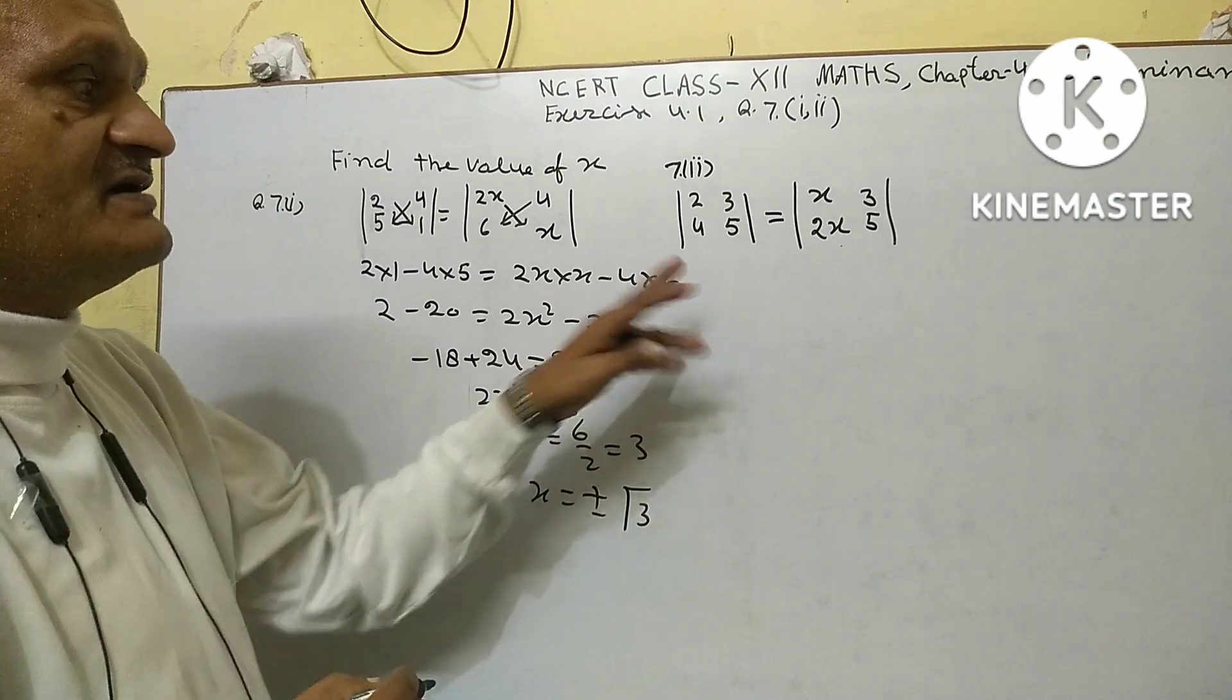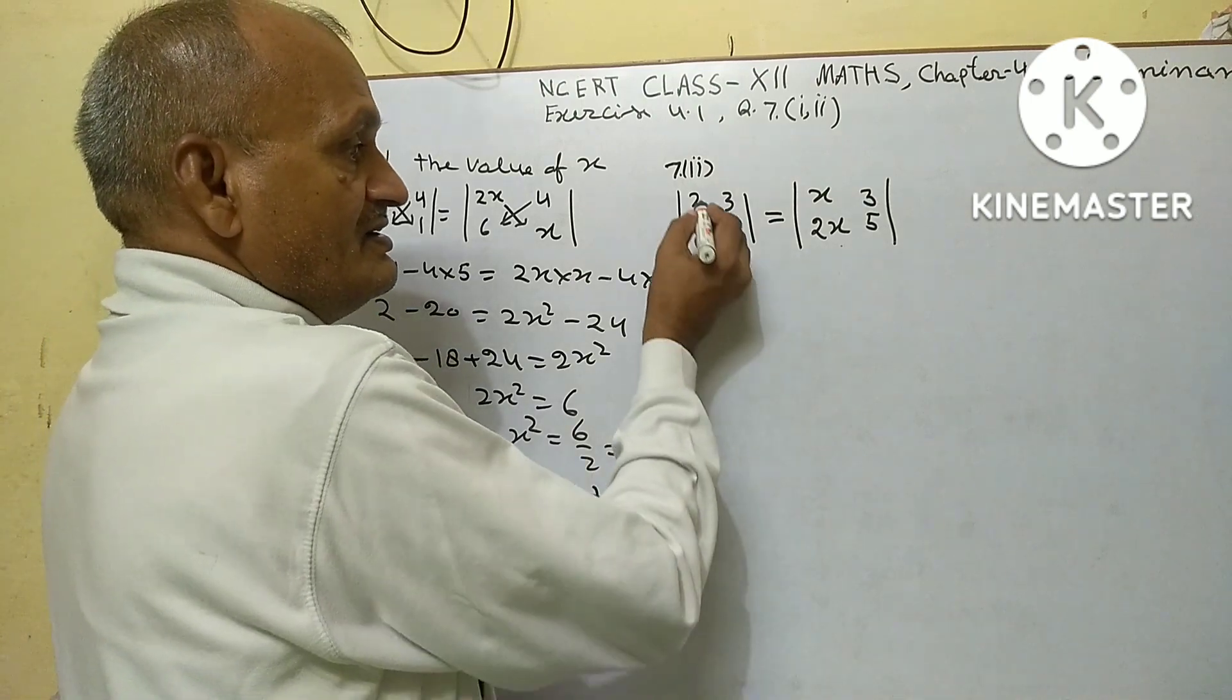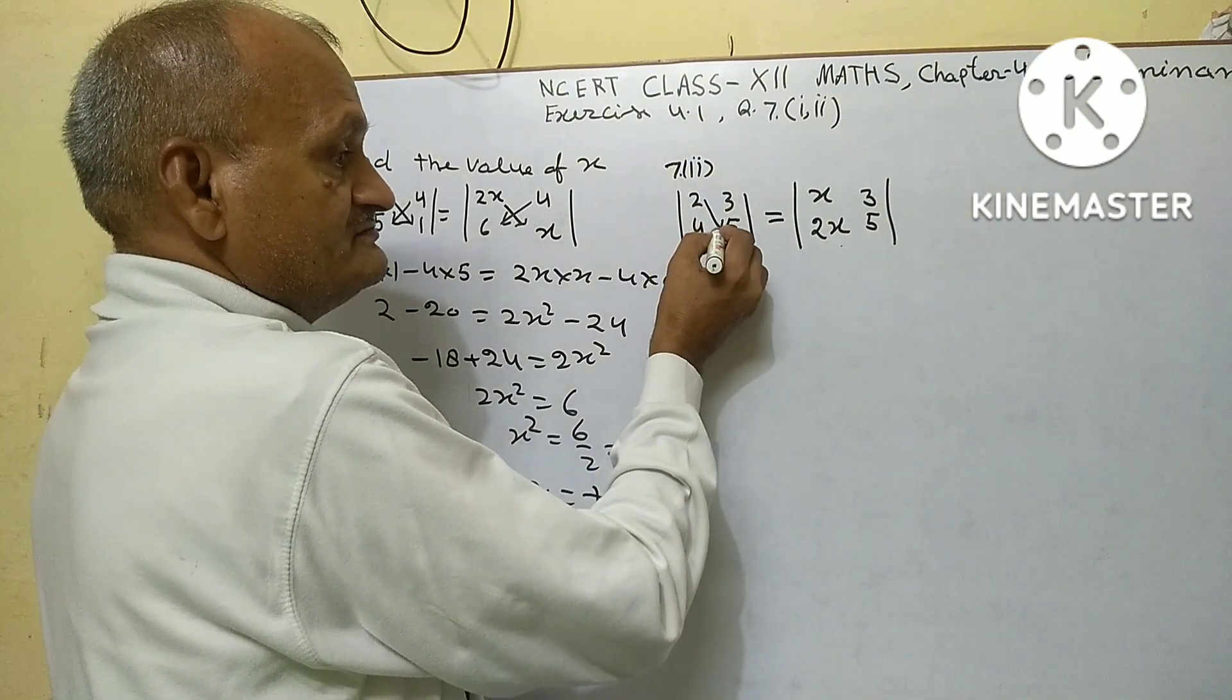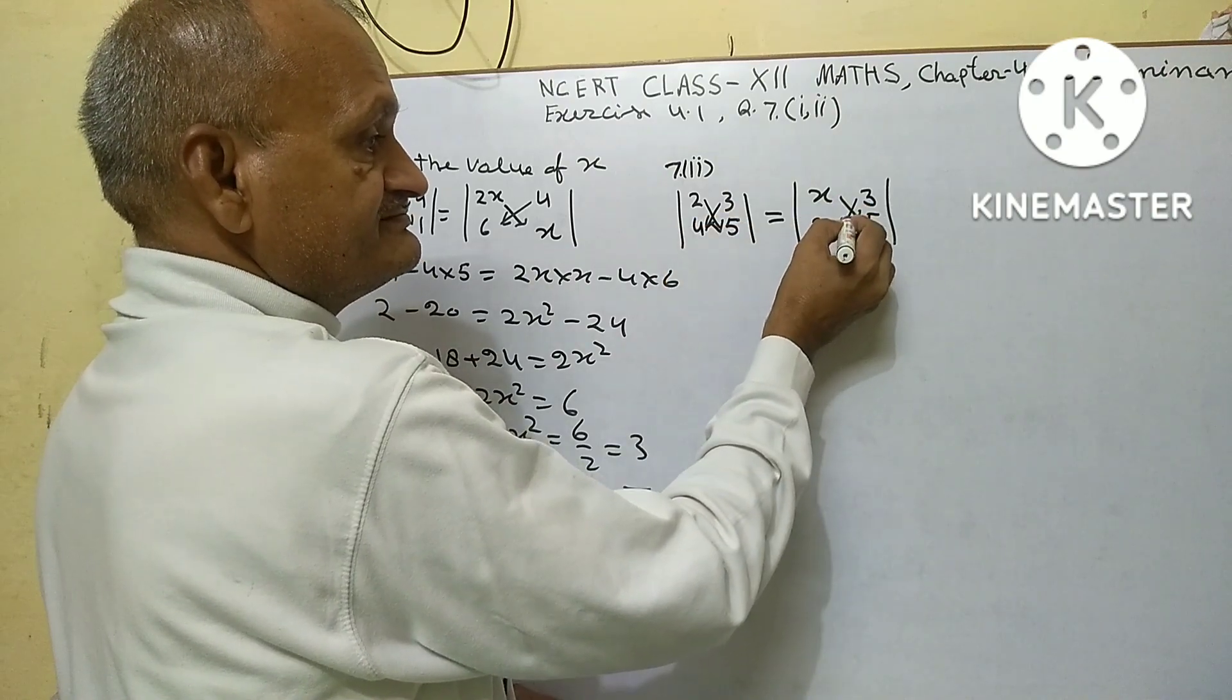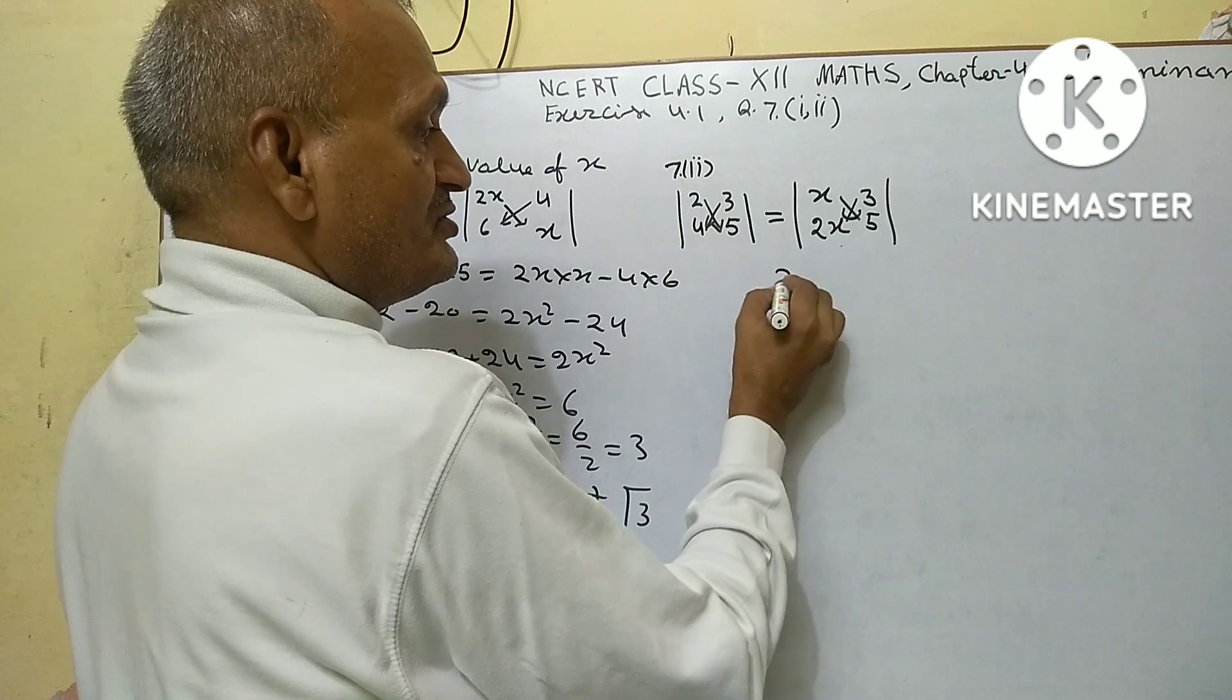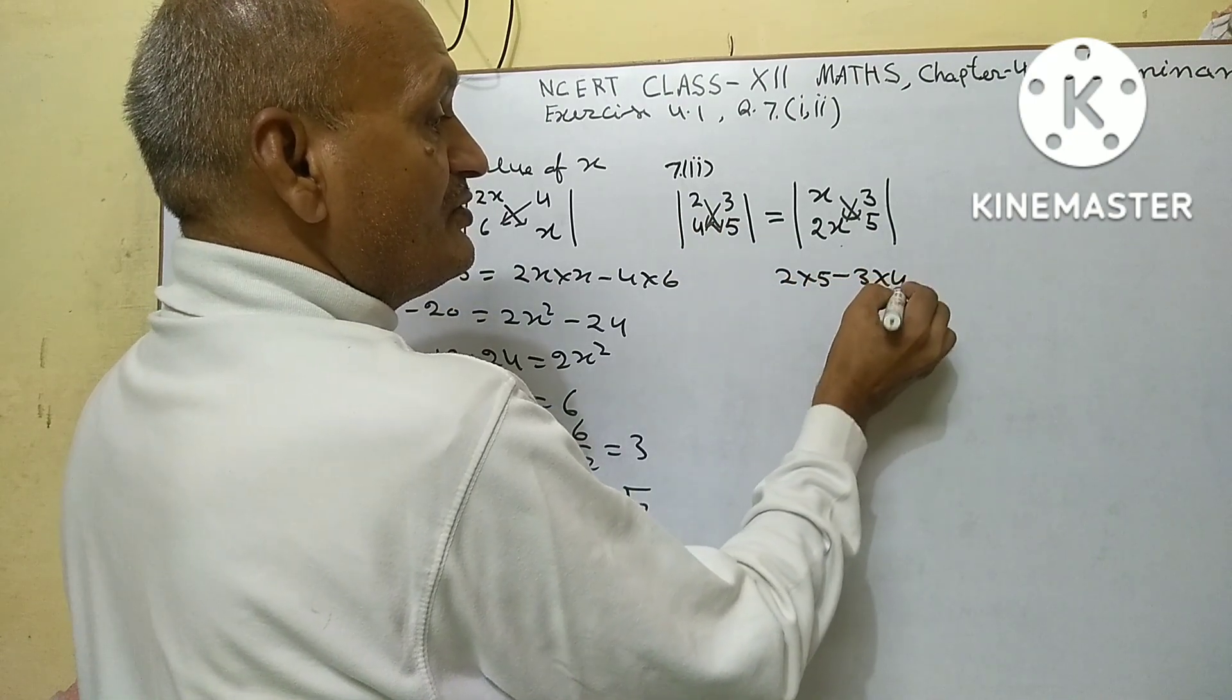Now second part. Now solution. So, 2 into 5 minus 3 into 4.